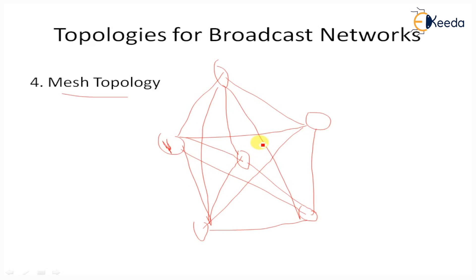In mesh topology, point-to-point connections can be changed according to the application. A node can directly send a signal to a particular node, or broadcast to all nodes. This shows the flexible nature of mesh topology — in case of failure of one node or link, the failure is detected and signal traffic is rerouted from the failed node to another link within the mesh connection.